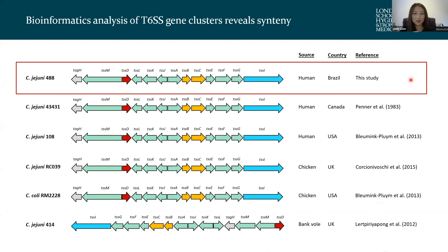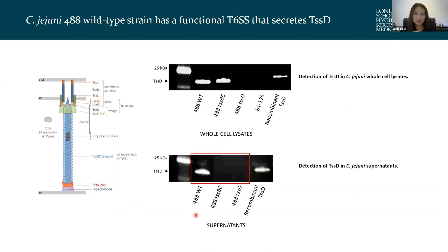For our study, we obtained strain 4A8, a recent human clinical isolate from Brazil, and performed whole genome sequencing to analyze the type 6 cluster. This sequence was compared with other type 6 positive strains, revealing a type 6 cluster highly conserved in human and chicken isolates. In the 4A8 strain, TssD was secreted into the supernatant, indicating a functional type 6. When we mutated either TssD or the TssD-C contractile sheath structures, TssD was no longer secreted, confirming the type 6 is non-functional in these mutants.